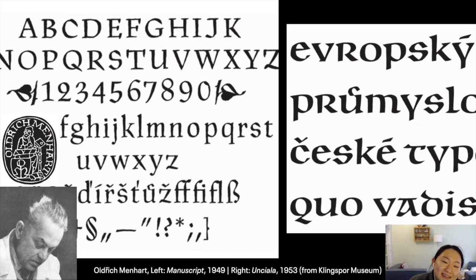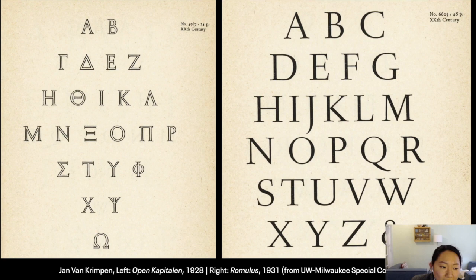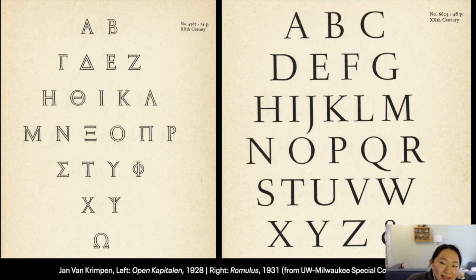Jan van Krimpen is another calligrapher who was inspired by Johnston's book when he was a student. He became a great calligrapher in his own right, was also inspired by the Italian writing masters, and designed a lot of beautiful typefaces for Enschedé. You can see he has a very elegant classical style.